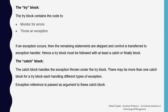The try block contains code to monitor for errors and throw exceptions. If an exception occurs, the remaining statements are skipped and control is transferred to the exception handler, which can be defined by the programmer or the Java compiler. A try block must be followed by at least a catch or a finally block. The catch block handles exceptions thrown from the try block; there may be more than one catch block for a try block, each handling different types of exceptions. The last catch block should handle the most general class of exception.